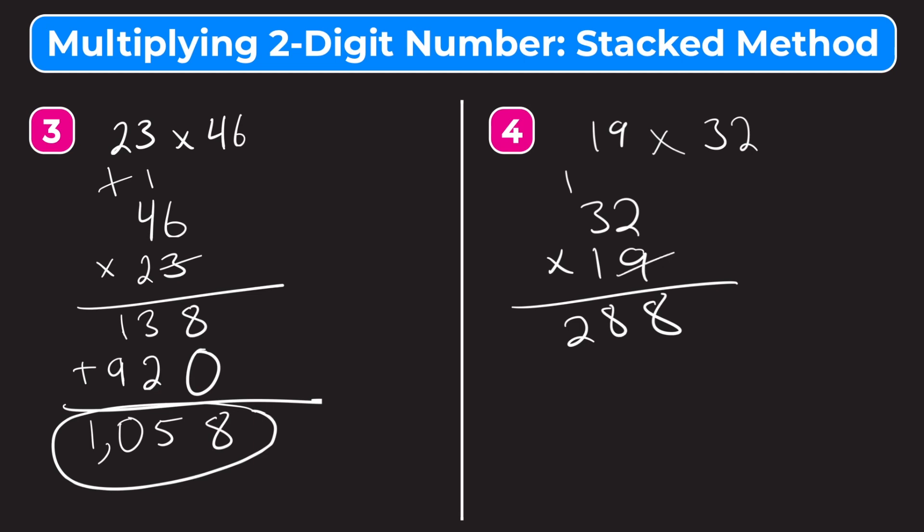Now cross that 9 off, cross this 1 off, and start with the 1 down here. Remember, our 0, because the 1 is in the 10's place. So it's representing 10. So 1 times 2 is 2, so we put the 2. And then 1 times 3 is 3. And now our final step is just to add these two answers together. So we have 8 plus 0, that is 8. 8 plus 2, that's 10. We carry our 1 just like normally. 2 plus 3 is 5, plus our 1 that was carried is 6. So 19 times 32 is 608.